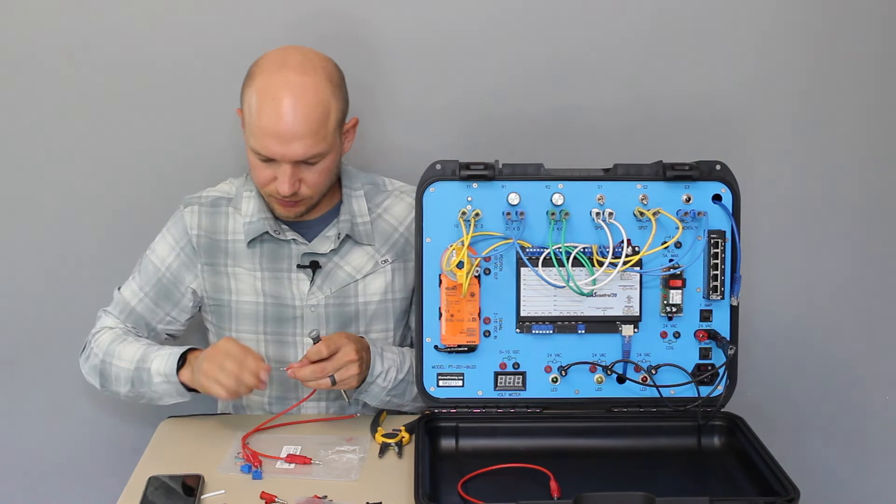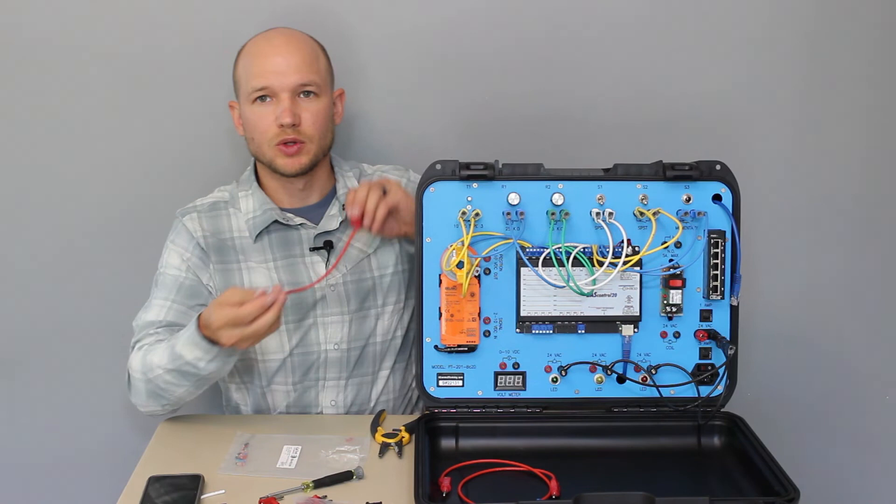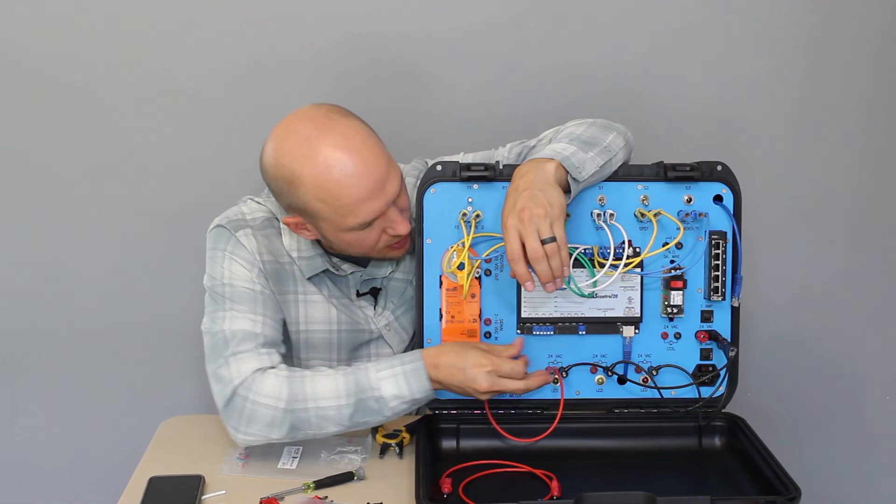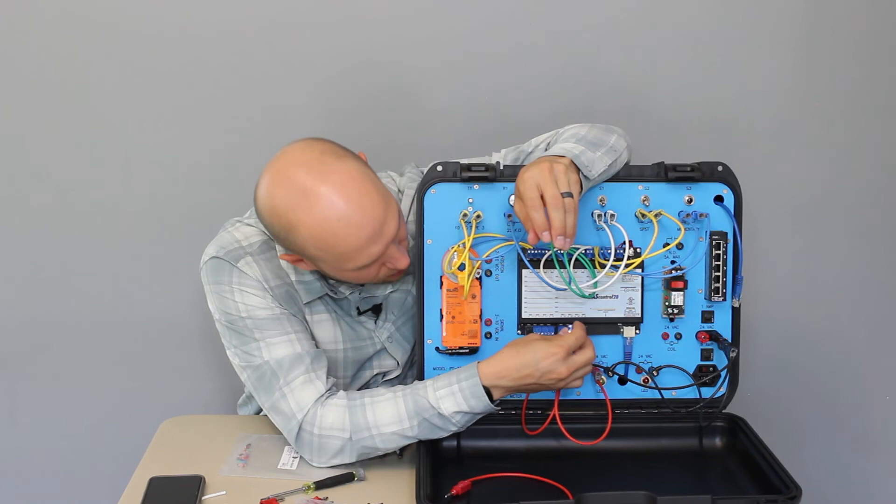So with those wired, we can connect the lights to the controller. Green light is binary output one. Yellow light or light number two is binary output two. The last light going to be binary output three.